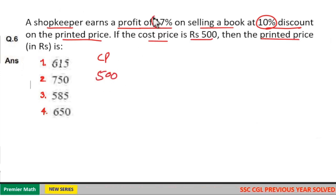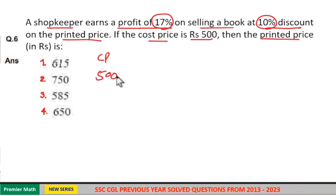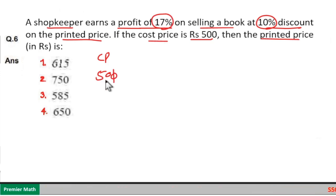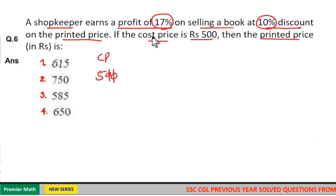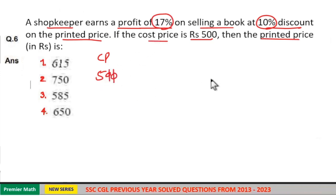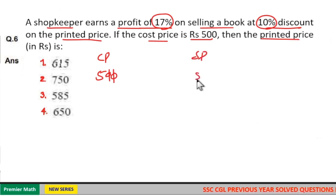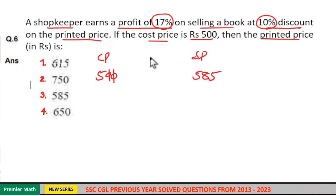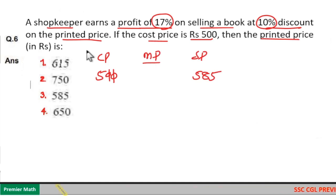Profit is 17%. 10% of 500 is 50, so 1% is 5, and 17% is 17 × 5 = 85. Therefore the selling price is 500 + 85 = ₹585.